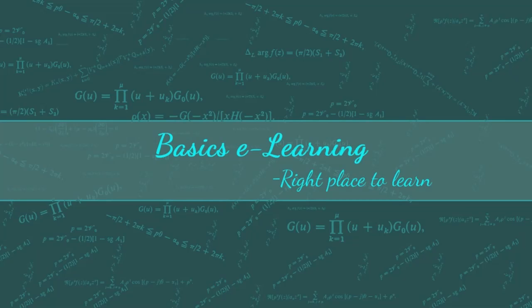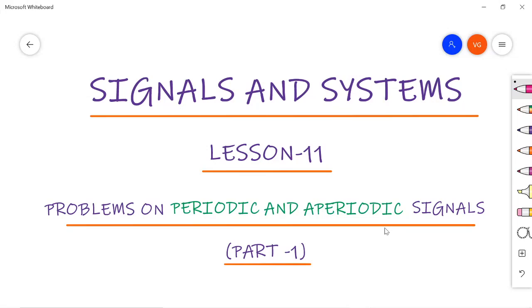Hello everyone, welcome to Basics E-Learning. In lesson number 11, I am going to discuss problems on periodic and aperiodic signals. I am going to release this video in two parts. This part one completely explains problems related to continuous time signals — that is, to check whether a given continuous time signal is periodic or aperiodic, and how to calculate the fundamental time period. The basics of this topic are already discussed in my previous videos; I suggest you be thorough with the concepts before starting with the problems. I am leaving a link in the description box — please go through it once.